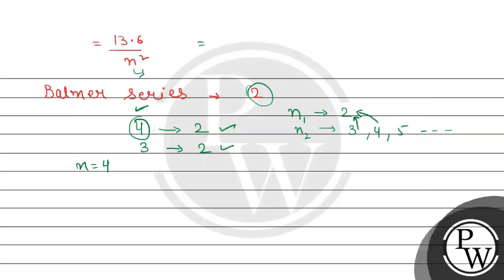So the binding energy will be 13.6 divided by n squared, which is 4 squared, and this will be in electron volts. Now we can use the formula.